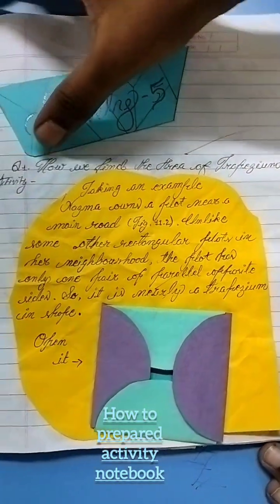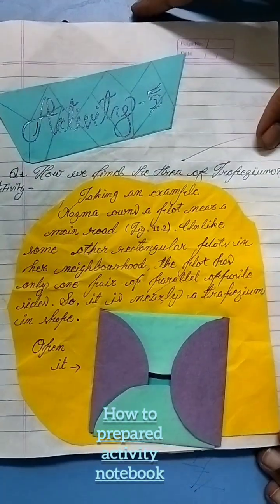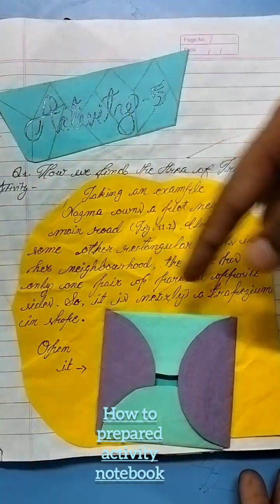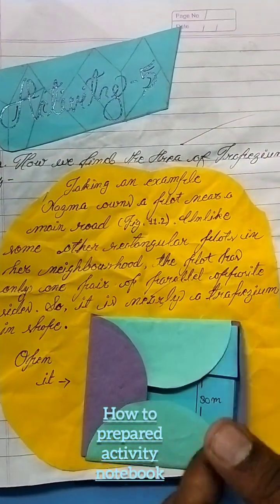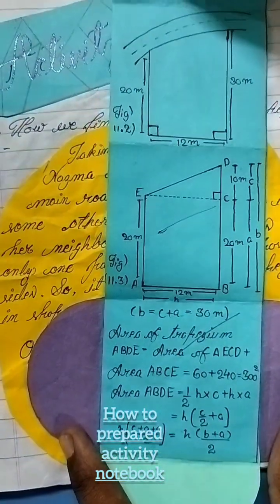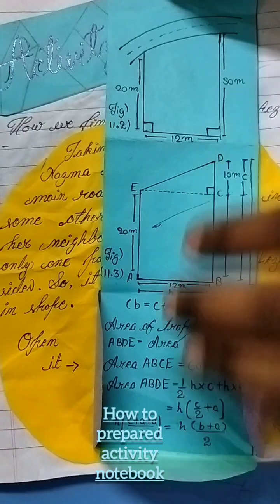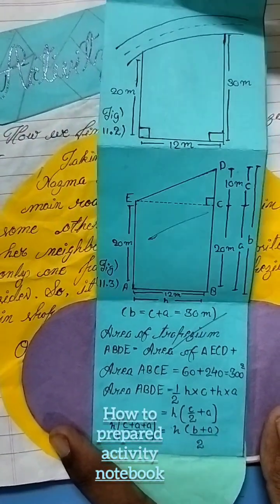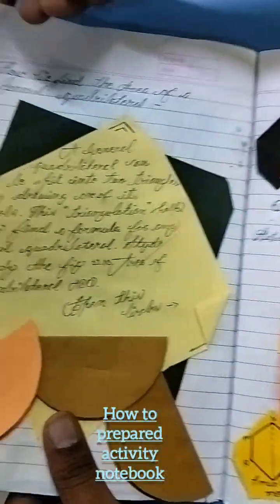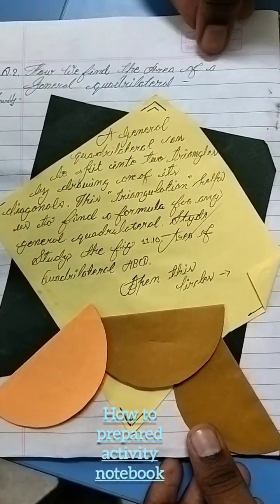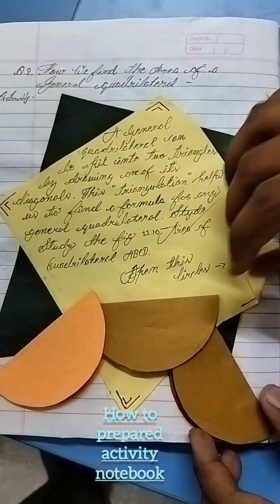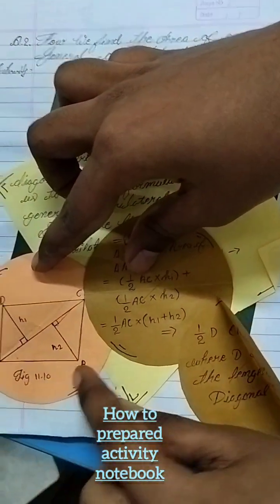The fifth activity is about how we find the area of a trapezium. This activity is taken from the chapter mensuration. We take an example to understand the area of trapezium — diagrams and concepts are shown here. A second example covers how we find the area of a general quadrilateral, with the relevant concepts and diagrams included.